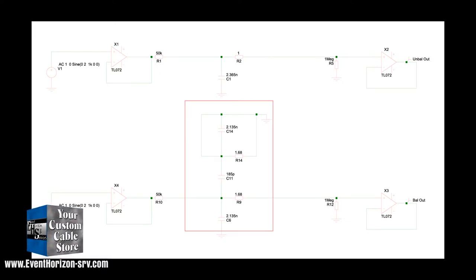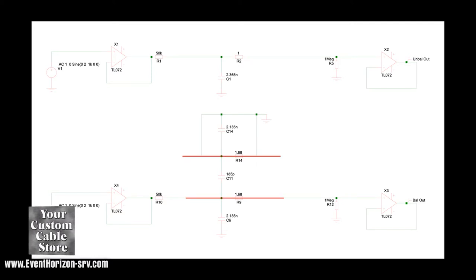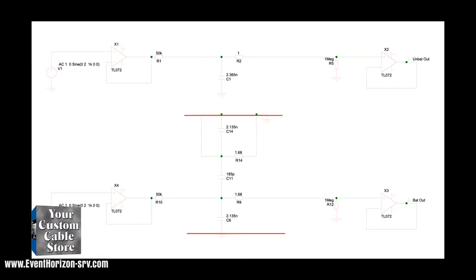Looking at the balanced wire, these lines represent the two main conductors with R14 and R9 being the wire resistance and C11 being the conductor to conductor capacitance. These lines represent the shield and C14 and C6 fill the role of conductor to shield capacitance.